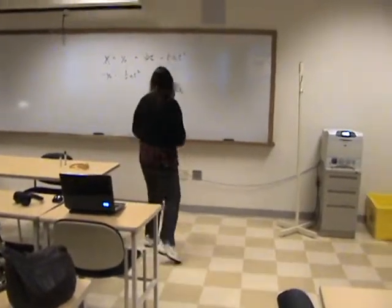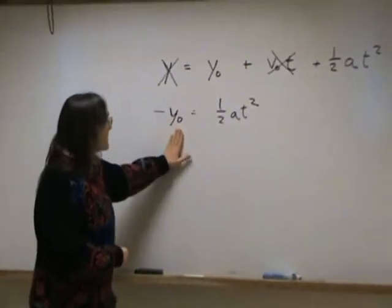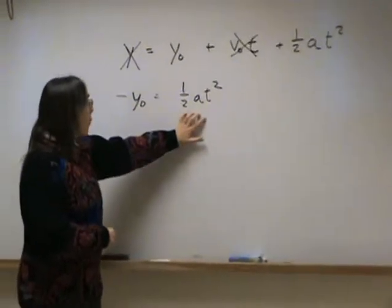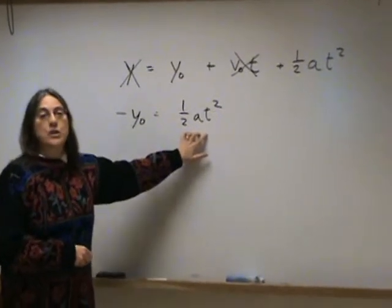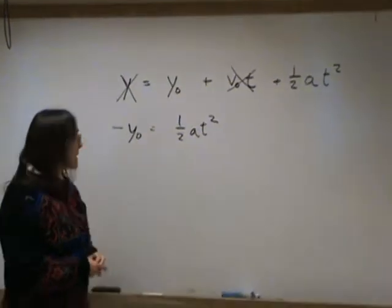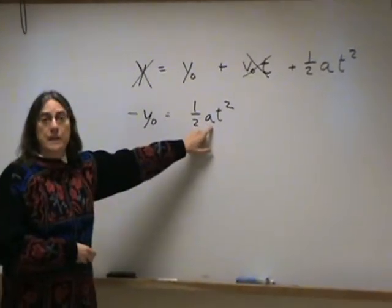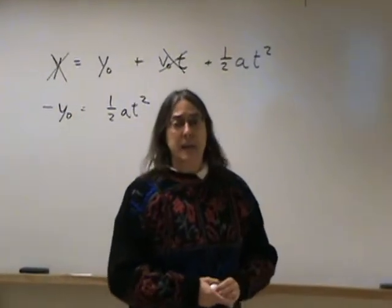You can then graph y0 on the y-axis, that's the height, versus one-half t squared on the x-axis. If the acceleration was a constant, then it will form a straight line, and the slope will be the value for the acceleration. You can also do a linear regression of your data to get the best fit.